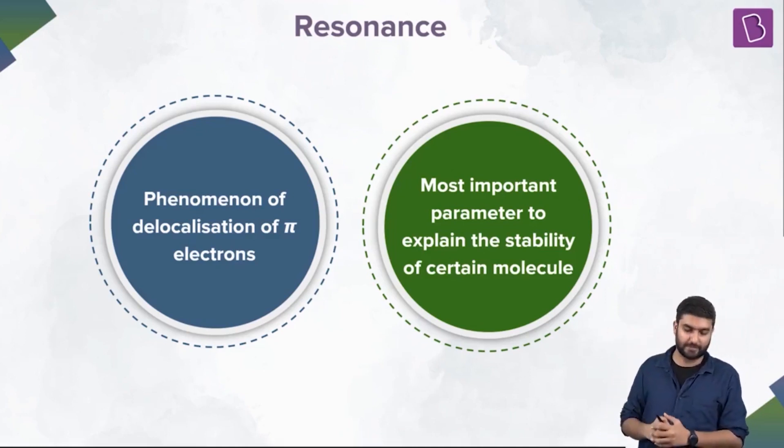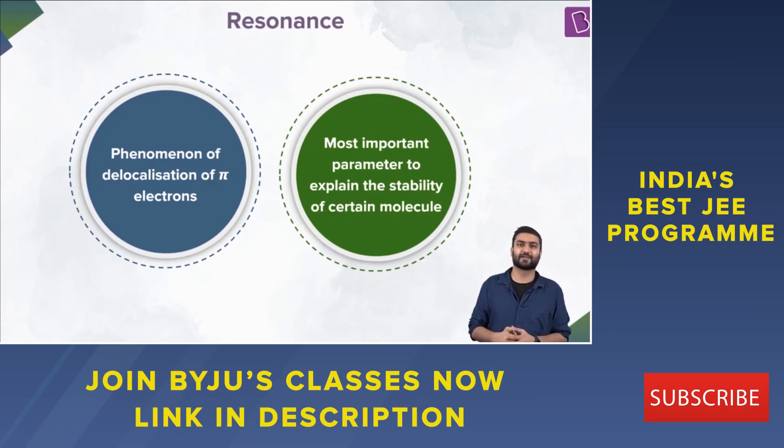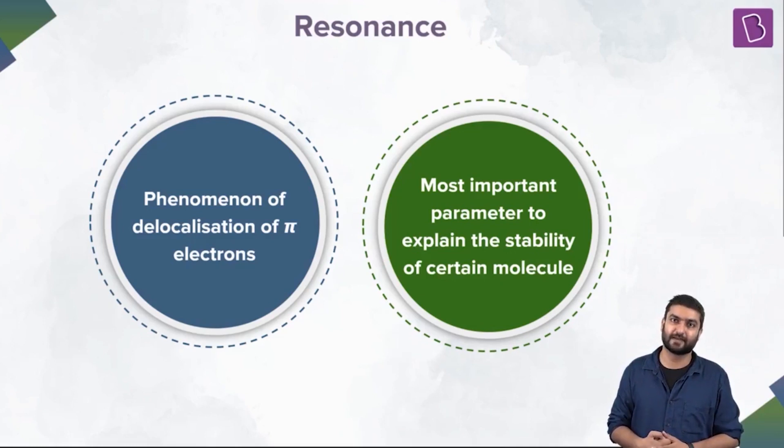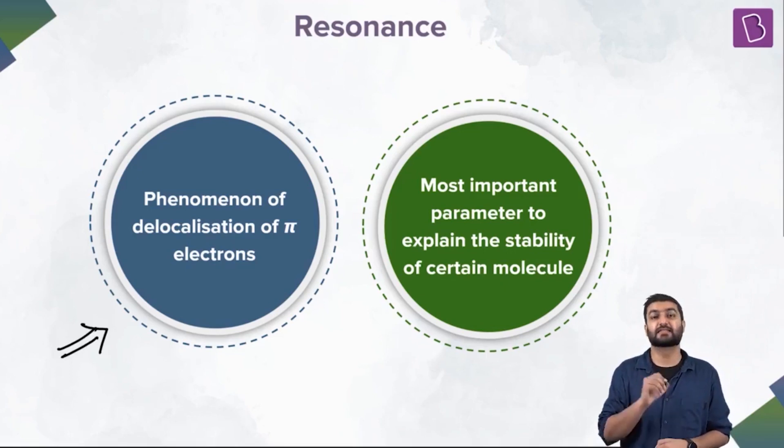So read over there. What does it have? There was a keyboard, it got knocked over. Cool. Phenomena of the delocalization of pi electrons. Most important phenomena to explain the stability of certain molecules. Definitely. But what do you have to retain and remember? It is the phenomena of delocalization of pi electrons. But also we have lone pairs or non-bonding electrons participating in resonance as well. So remember that.